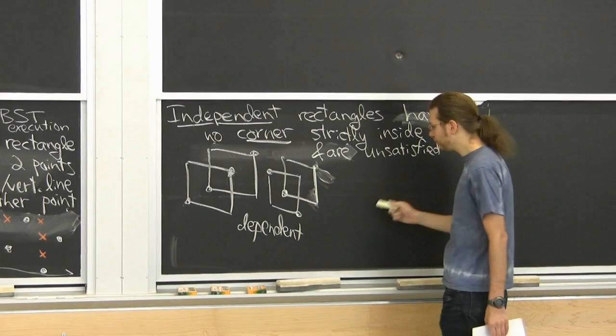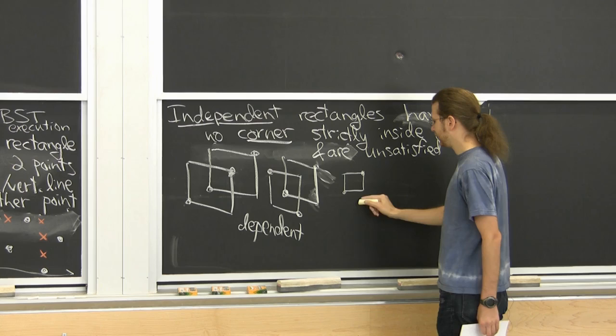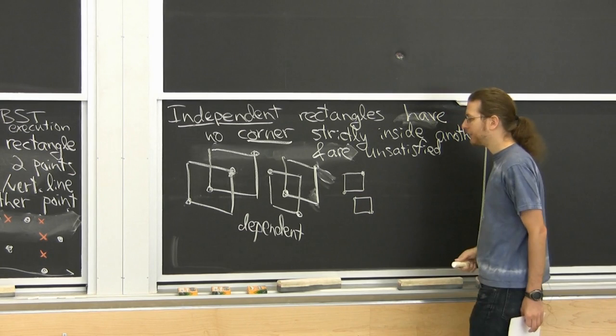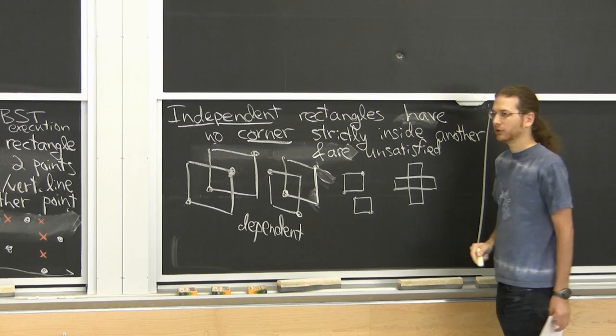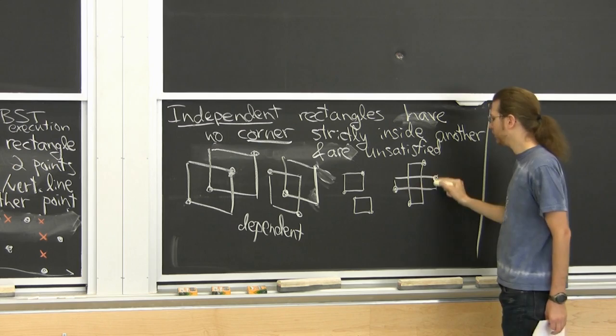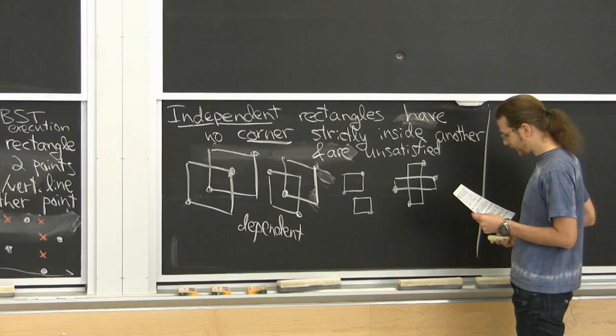For independent rectangles, a rectangle is defined by two points but has all four corners. Rectangles might be completely disjoint — those are independent. There are also other cases where rectangles overlap but no corner is strictly inside another, which are also independent.